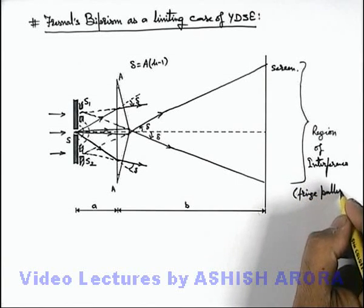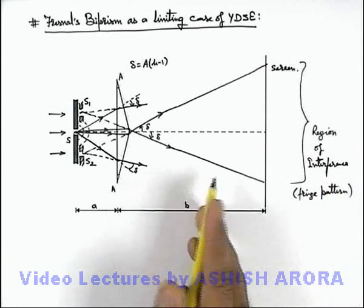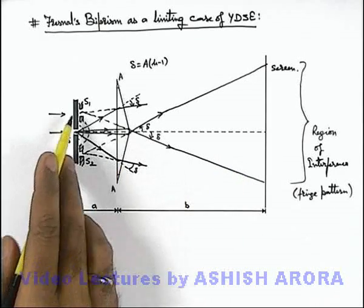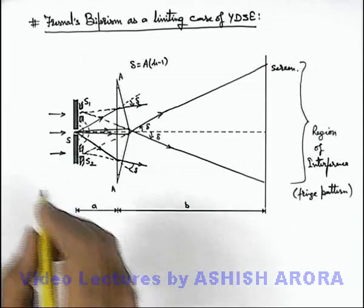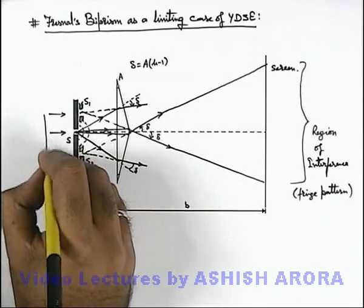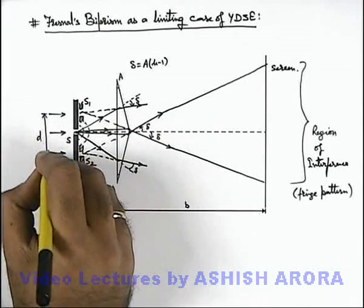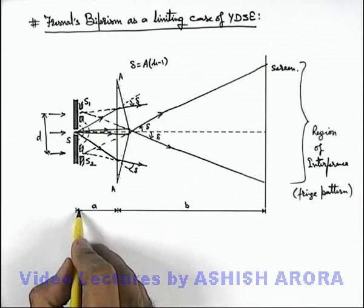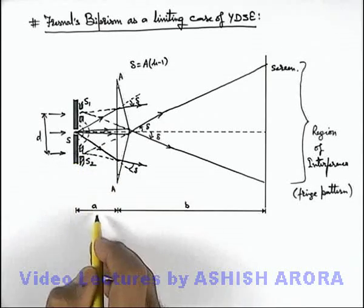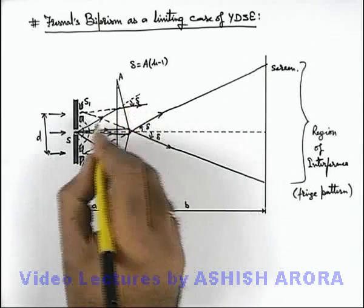In this situation, the setup is almost similar to YDSE, except here the biprism is used for formation of the two slits. If the slit separation is considered to be d, then as we know, this separation between biprism and slit plane is 'a', and if this angle is delta.